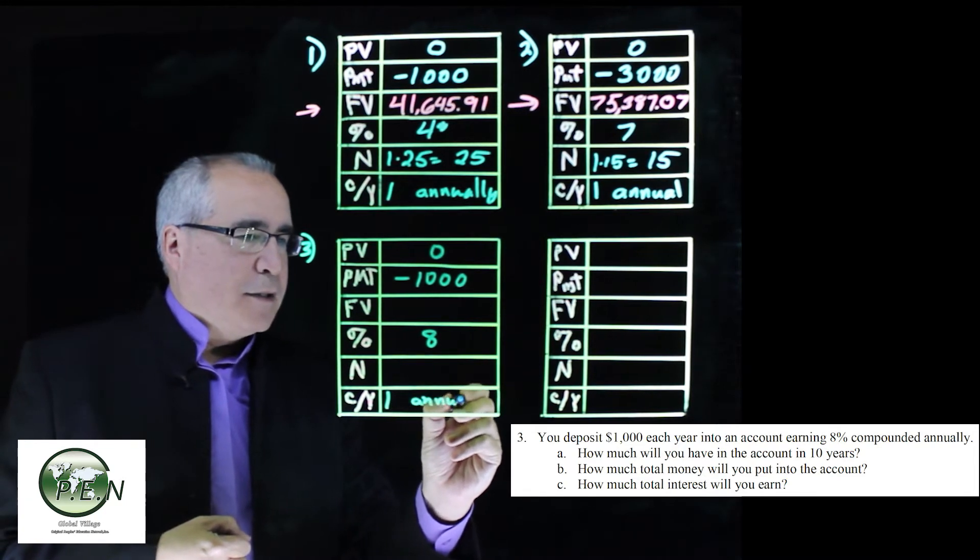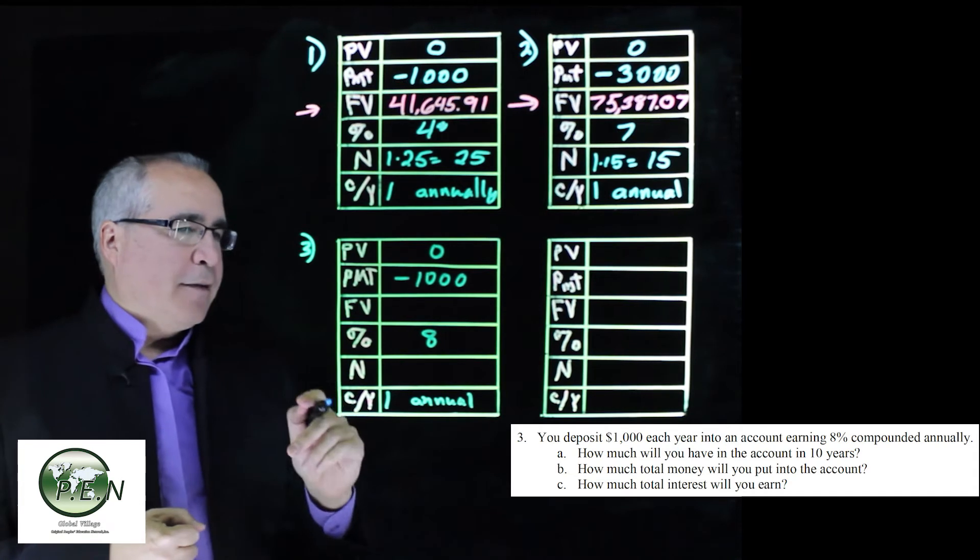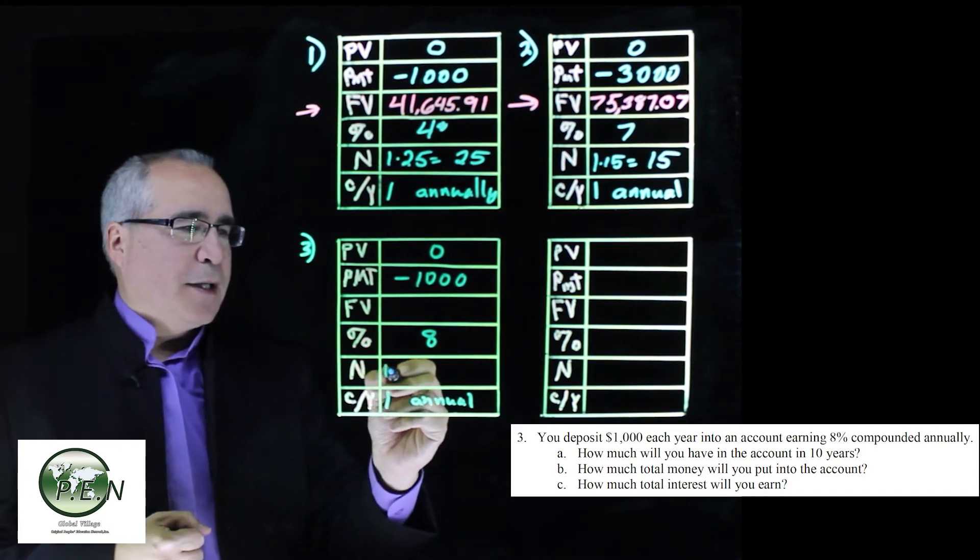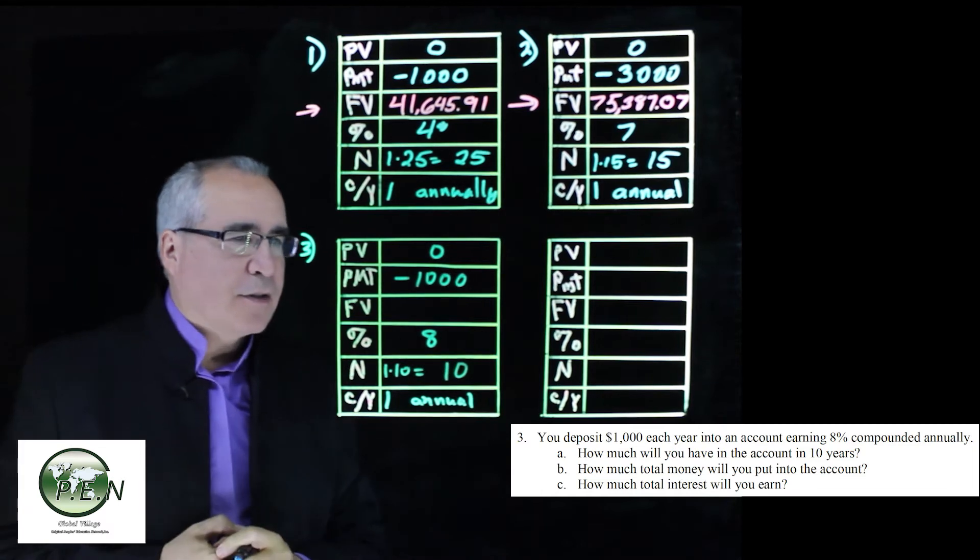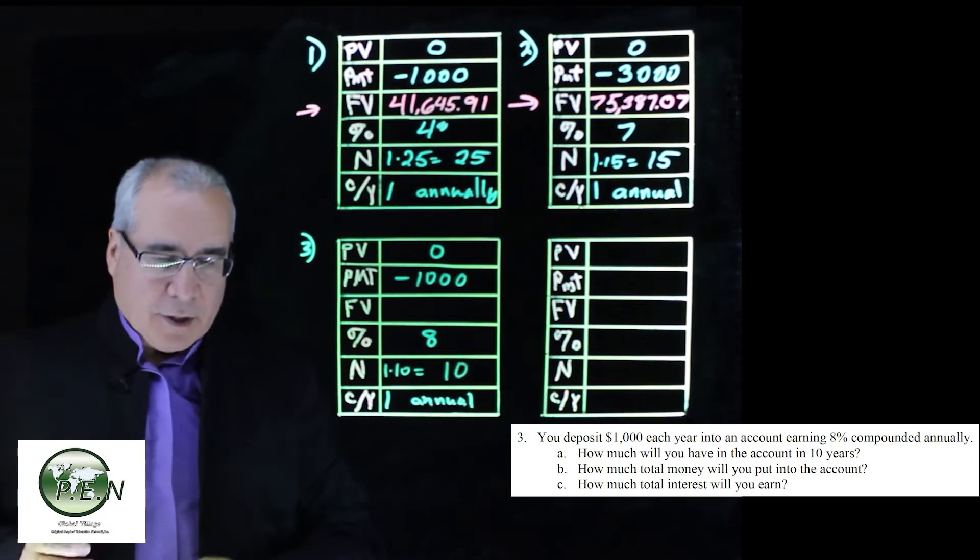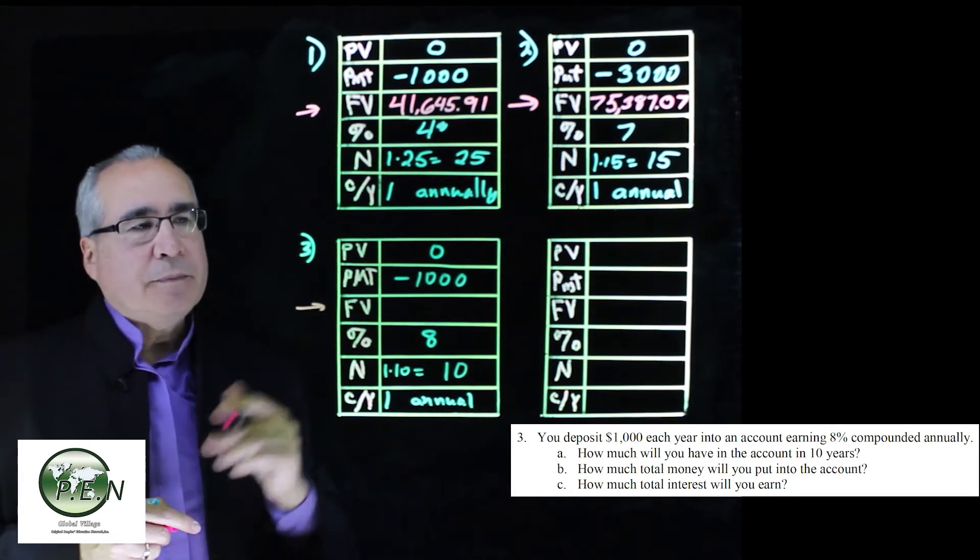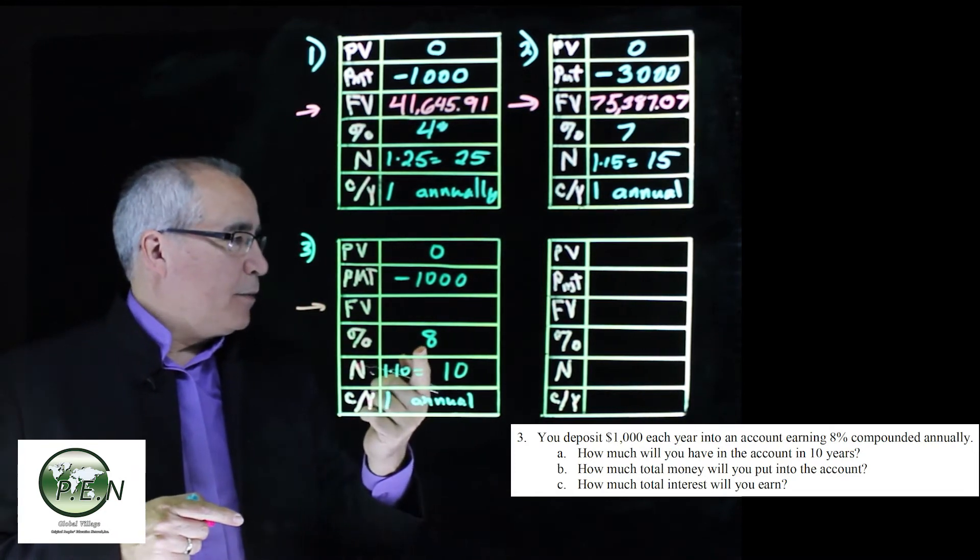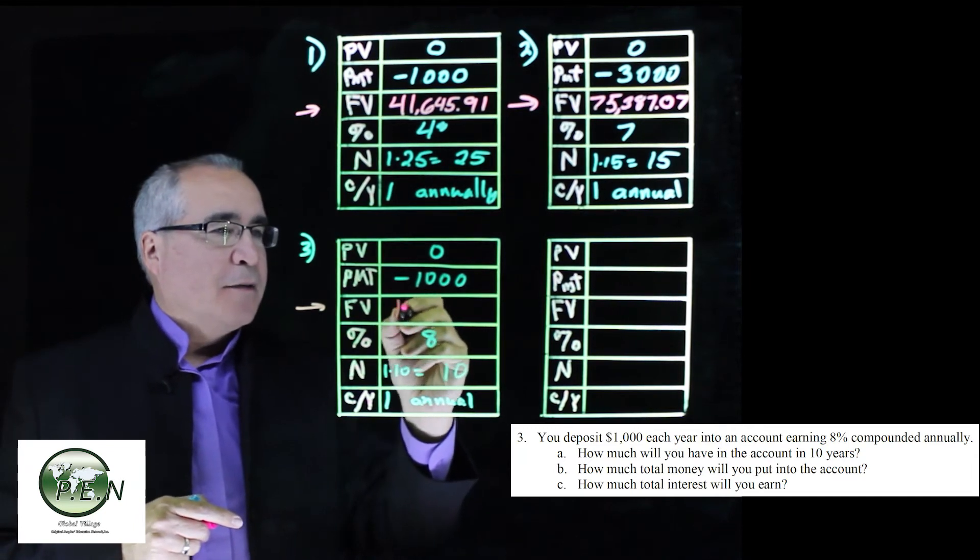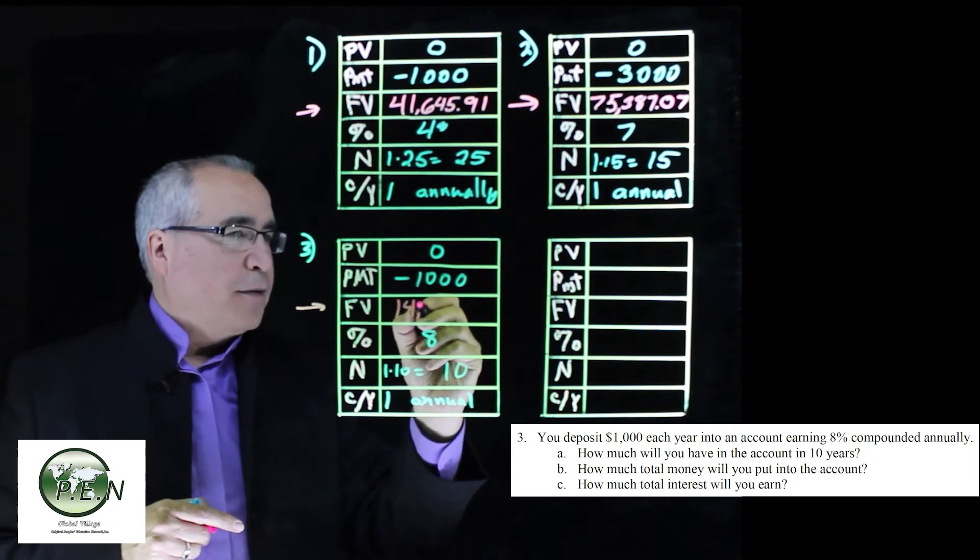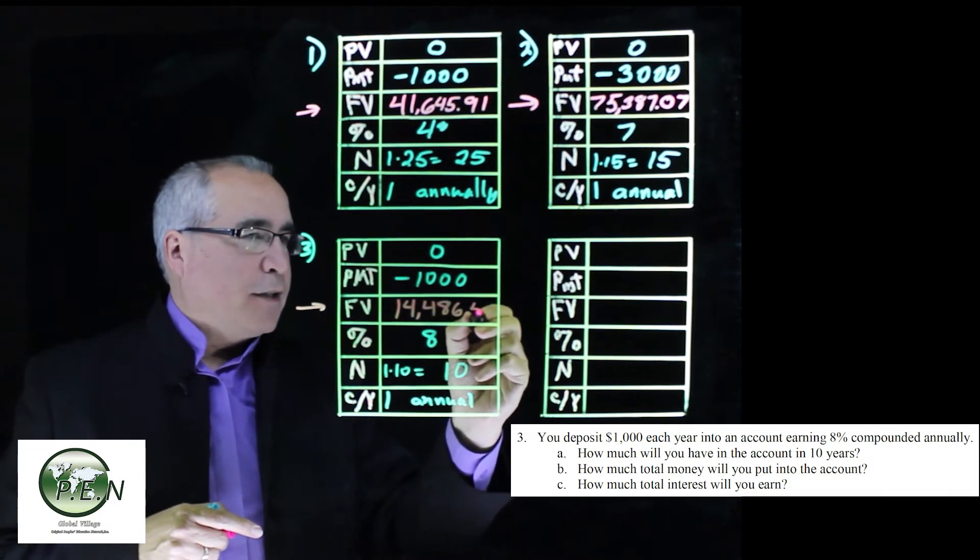We're going to have it there for 10 years. So we have 1 times 10, so this is the number of periods, it's just going to be 10. We will click on the future value button. And what we will see, if we've got everything in here correctly, we should get $14,486.56.